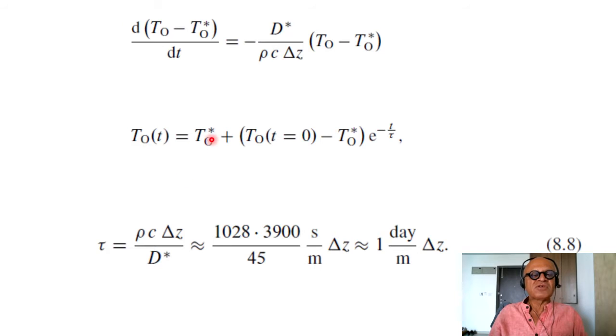So T_O itself can be written as T_O star plus T_O at initial time minus T_O star at some future time times e to the minus t over tau. So you can take this and whenever you have dA/dt divided by A kind of formulation, you end up with exponential term when you integrate, as you remember from your basic math.